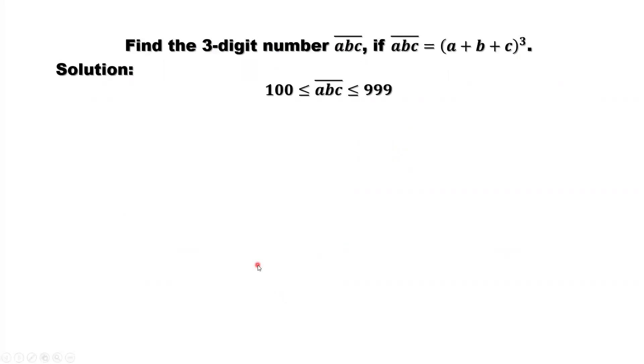First of all, we want to narrow down the search interval because the three-digit number ABC is a three-digit number. So the minimal number should be 100, the maximum number should be 999.